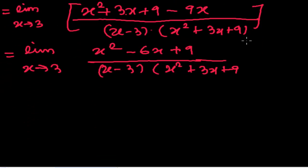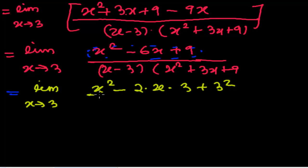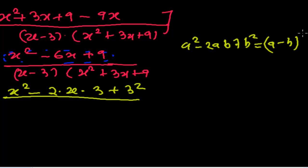Now, there is something different here. This part — x squared minus 6x plus 9 — you can see something differently. I'm splitting the 6 as 2 times x times 3. So it becomes x squared minus 2 times x times 3 plus 3 squared, which is the formula a squared minus 2ab plus b squared. And you know that a squared minus 2ab plus b squared is the formula of a minus b whole squared.